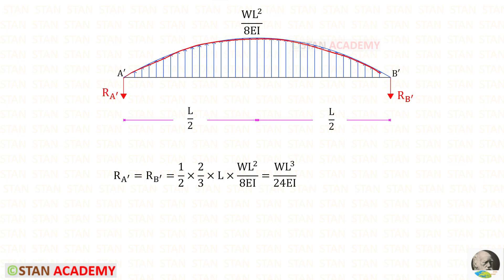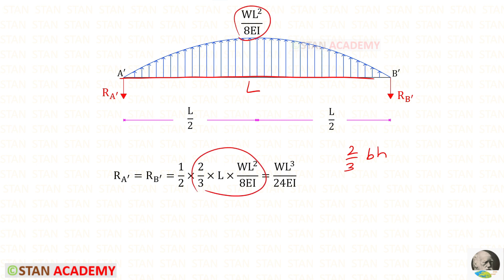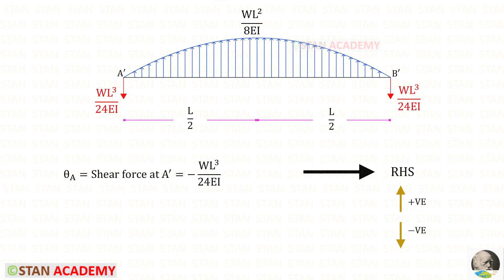We have to divide the area of the parabola by 2. The area formula is (2/3) × b × h; here the breadth is l and this is the height. So the area divided by 2 gives us R_A' and R_B'.